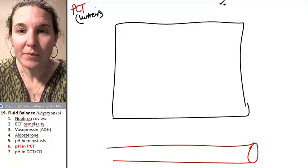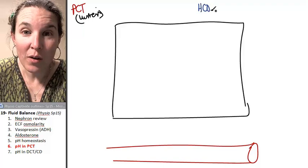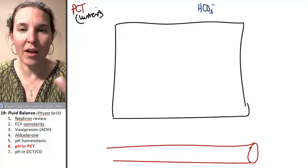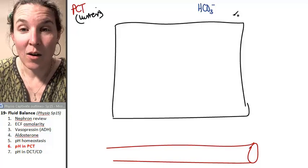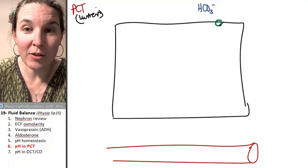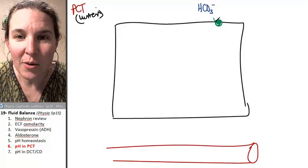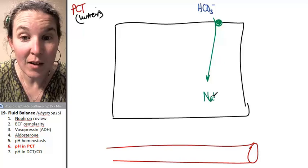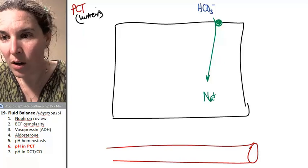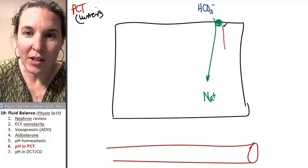Bicarbonate ions, HCO3 negative. Here they are, a pound of them. I'm going to begin with a transporter in my proximal convoluted tubule cell that exchanges sodium for hydrogen ions.